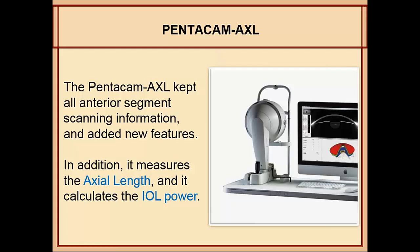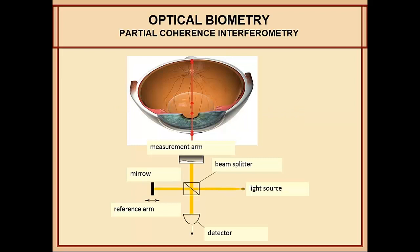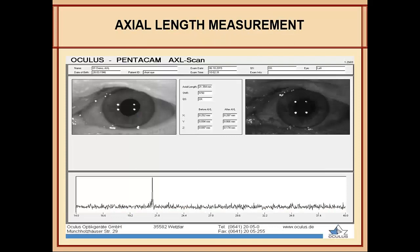First, the axial length measurement. This schematic from Oculus shows that the optical biometry used in the Pentacam AXL is similar to the IOL Master 500. It uses partial coherence interferometry where light is beamed into the eye and back to the machine, giving you the measurement of the eye. The printout shows a spike indicating a high-quality, accurate measurement of the axial length — very similar to what the IOL Master 500 gives you.